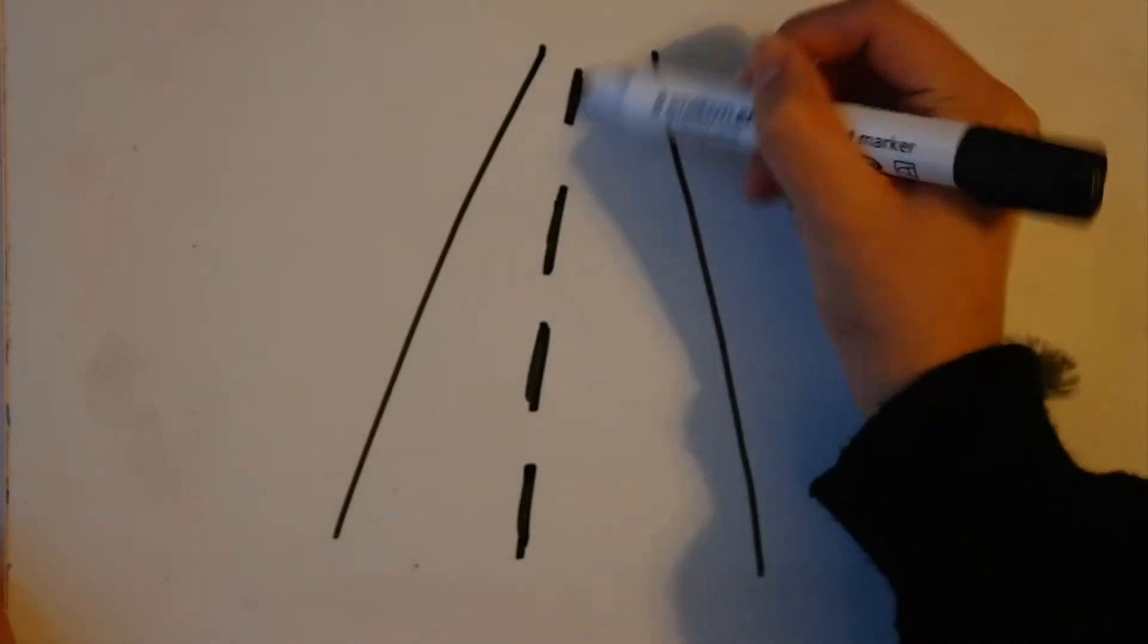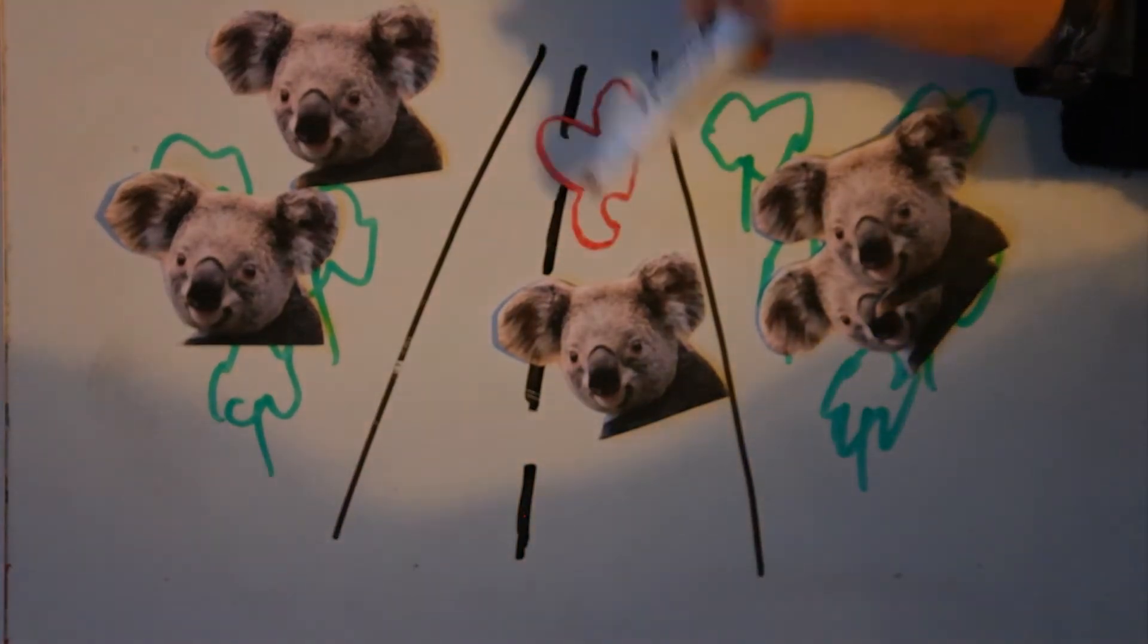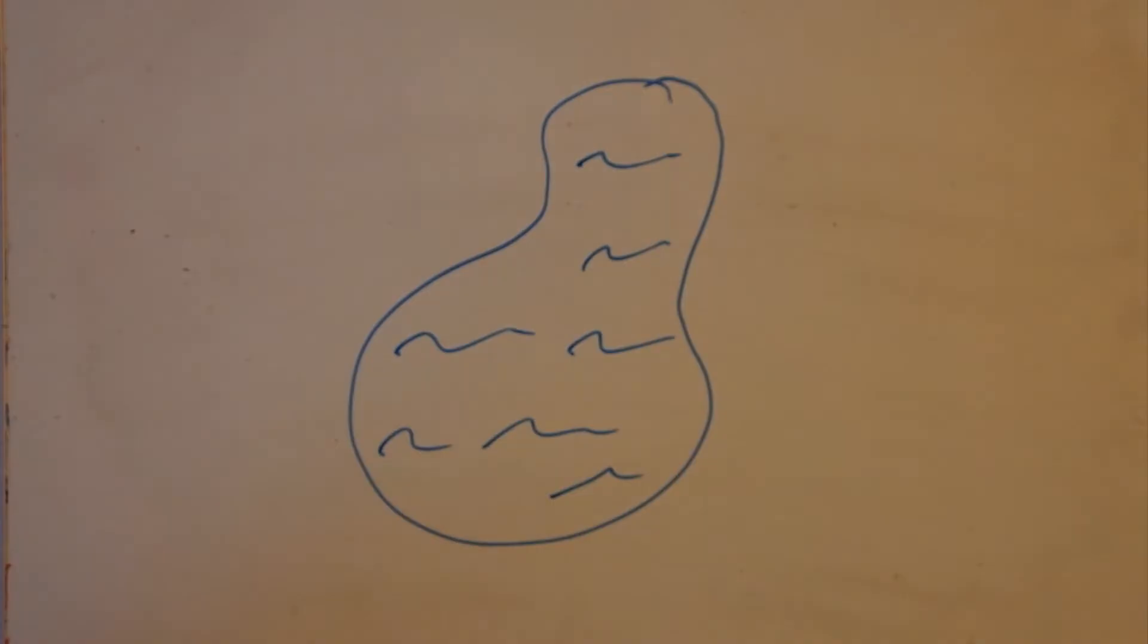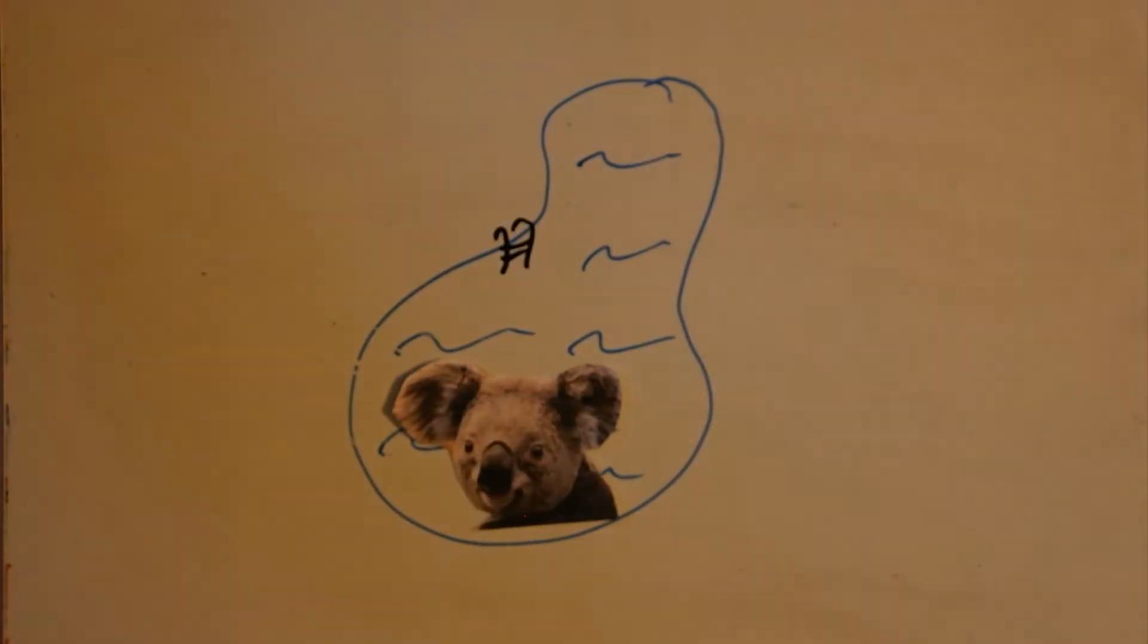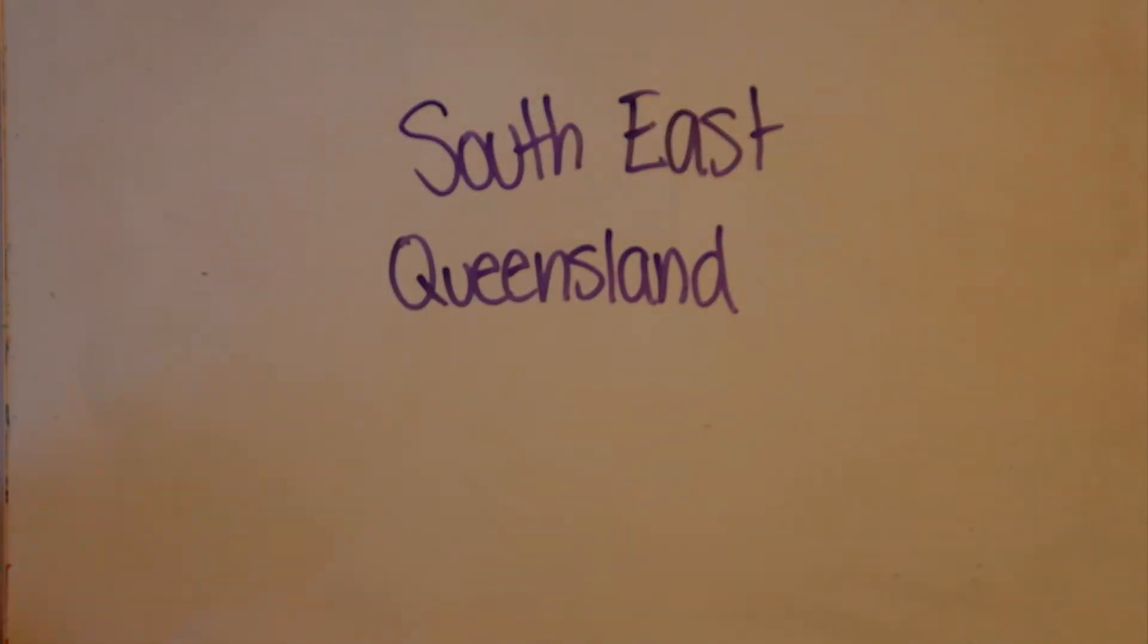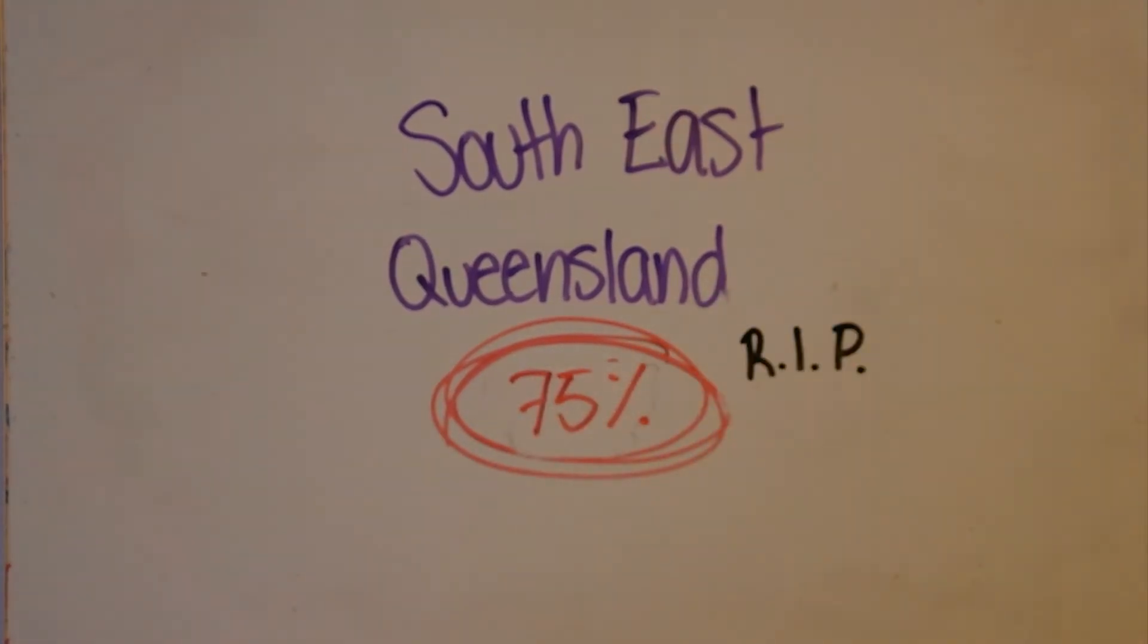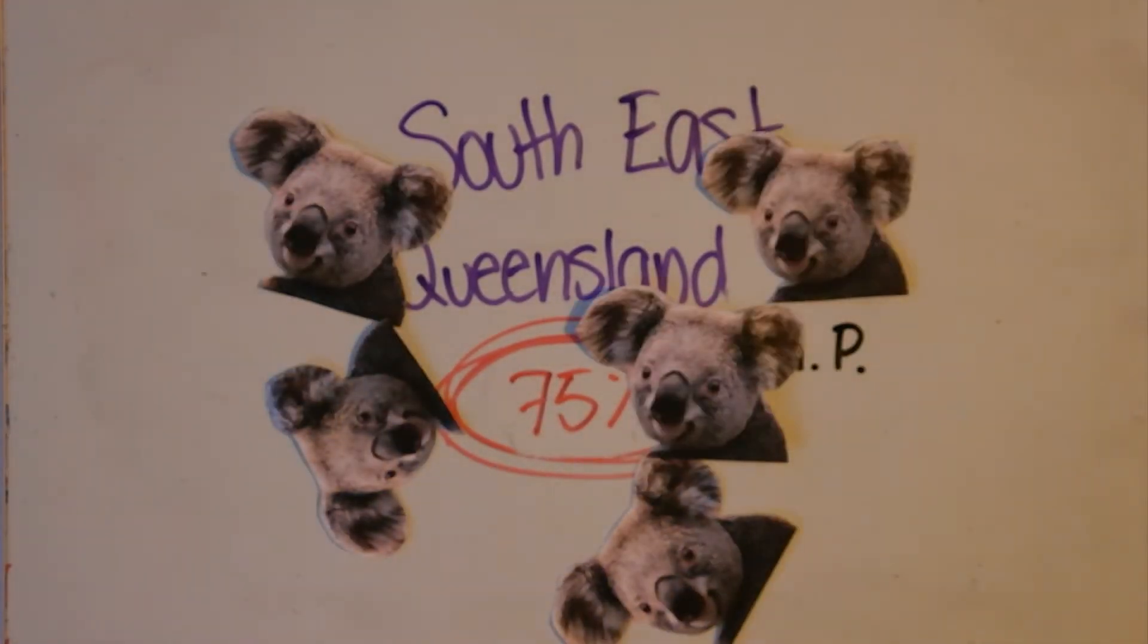These marsupials are more likely to move through developed areas, having to cross dangerous roads or pass through properties where they can get attacked by dogs or drown in backyard swimming pools. In southeast Queensland, over 100 koalas are hospitalized each year after being attacked by dogs, and 75% of these will die from their injuries.